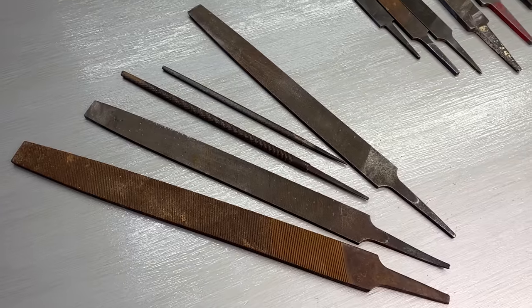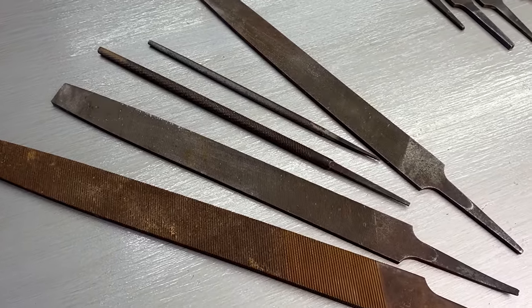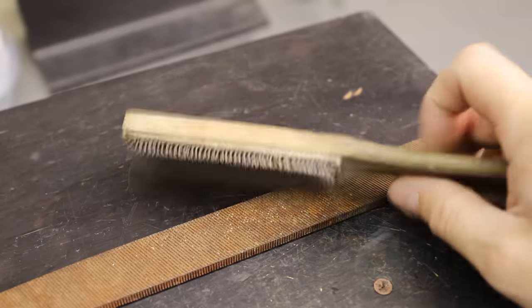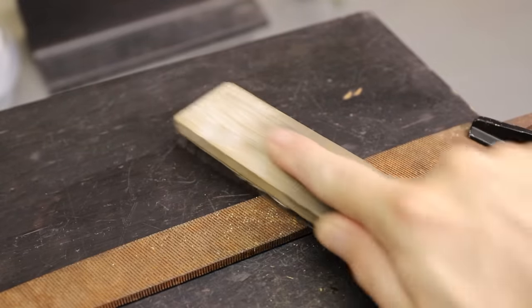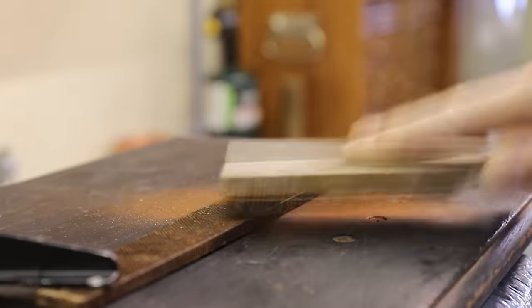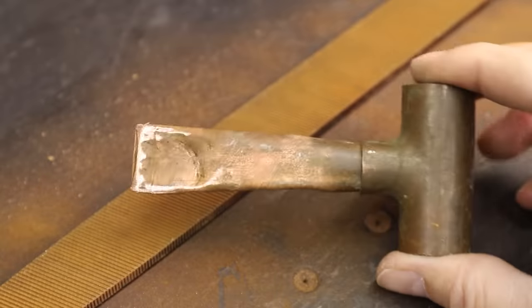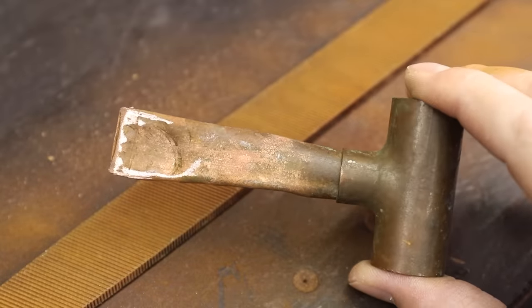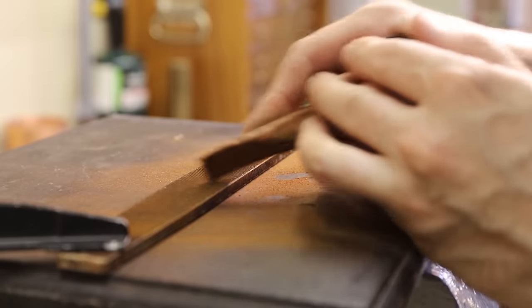I picked out six different files and then went to work cleaning them using a file comb. Cleaning them first will remove whatever might be gummed up in the teeth and allow the acid to get at the steel. I also used a piece of copper tubing which helps get into the teeth without damaging them.